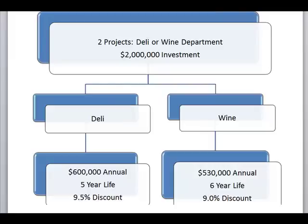So what I have is two projects: a deli department and a wine department, both of which are a $2 million investment. The deli department is going to return us $600,000 a year for five years at a discount rate of 9.5%. The wine department is going to give us $530,000 a year over a six-year life at a 9% discount rate.